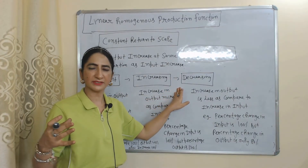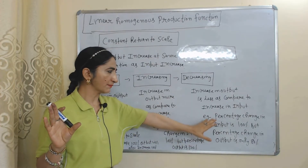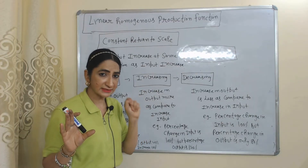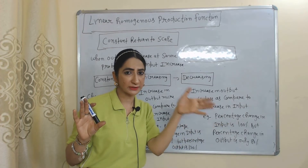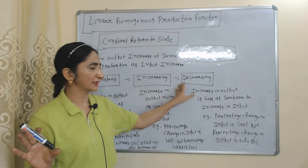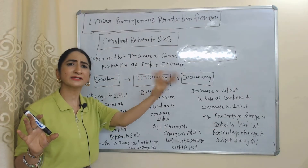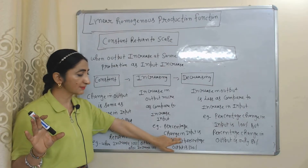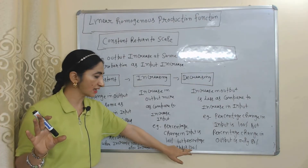Decreasing return to scale means the increase in output is less compared to the increase in input. For example, if the percentage change in input is 100% but the percentage change in output is only 80%, that is decreasing return to scale. Increasing return to scale means the increase in output is more compared to the increase in input — for example, input increases 100% but output increases 120%.